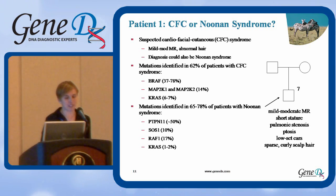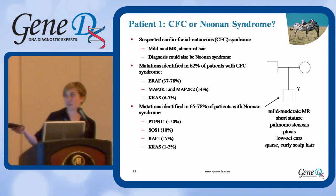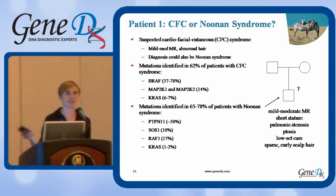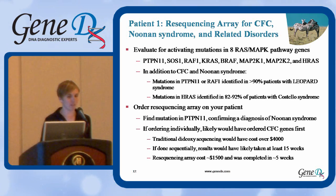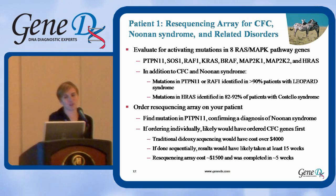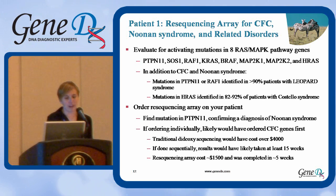Mutations are identified in a little over 60% of patients with a clinical diagnosis of CFC syndrome, and the mutations can occur in any one of four genes. Mutations are identified in about 65 to 78% of patients with Noonan syndrome, and there are four different genes associated with Noonan syndrome. There is some overlap — mutations in the KRAS gene can cause either a CFC or a Noonan syndrome presentation. Instead of traditional sequential sequencing, you can now do a resequencing array that evaluates mutations in the eight genes of the RAS-MAPK pathway, covering genes associated with CFC, Noonan, and also the HRAS gene associated with Costello syndrome.